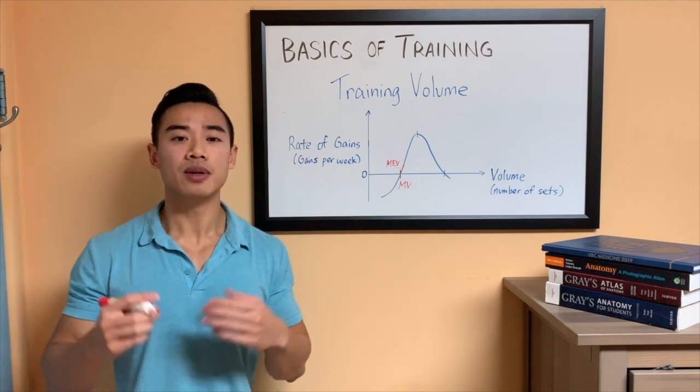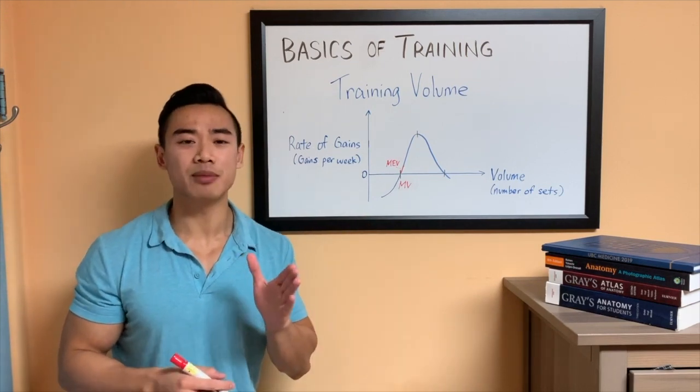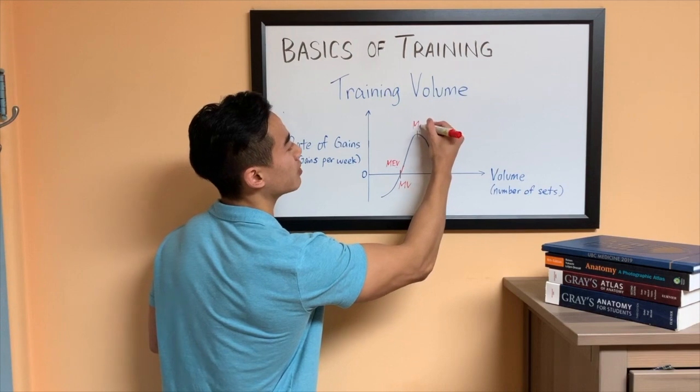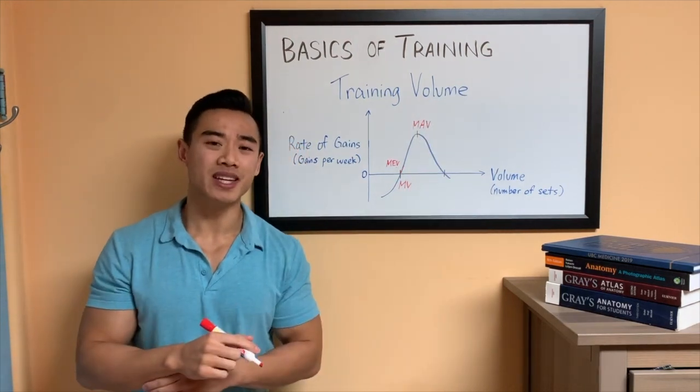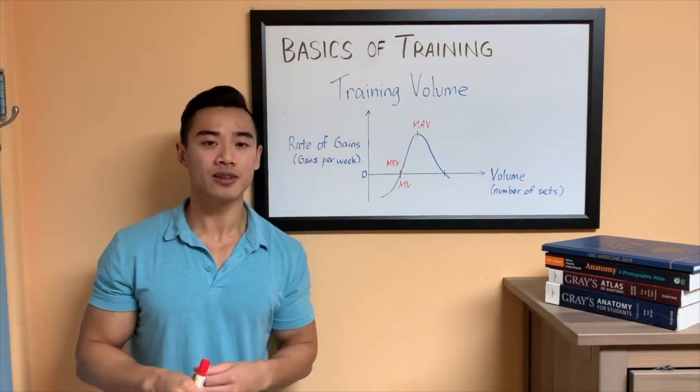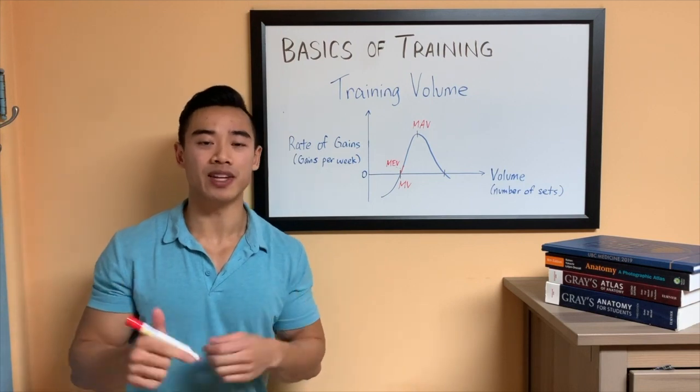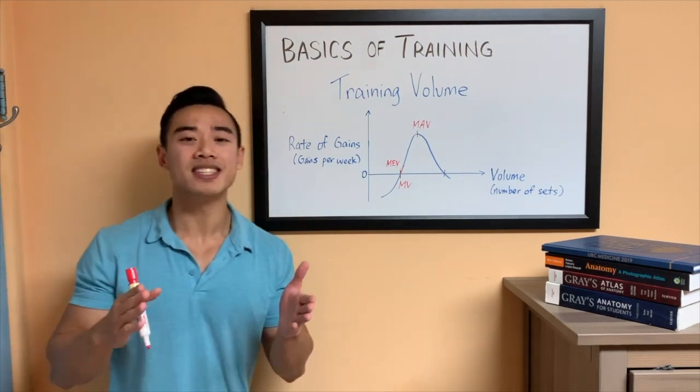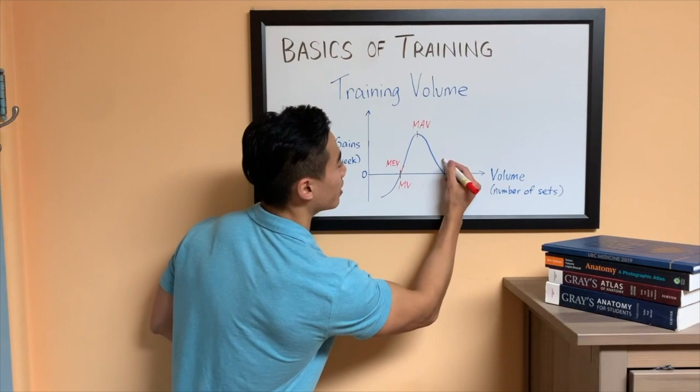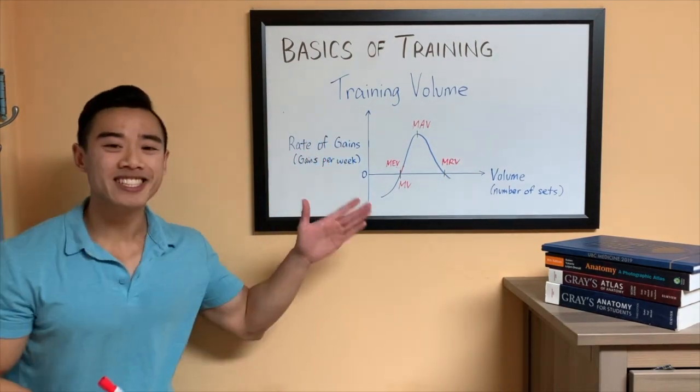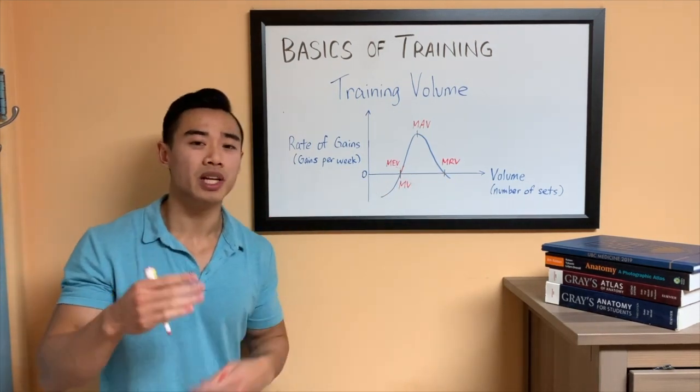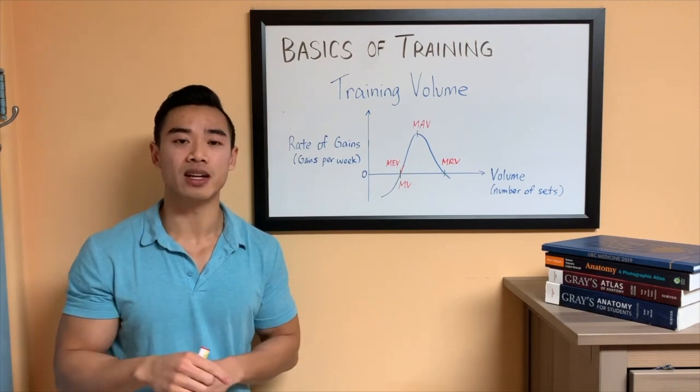After MEV, we have maximum adaptive volume. And that is the amount of volume that allows you to progress at your maximum rate, which we'll put here at this maximum point, MAV. I'll note that the MAV is difficult to pin down since it can change week to week. But obviously, this is what we're targeting. The last volume landmark is called MRV, or maximum recoverable volume. And this is the maximum amount of volume that you can still do and recover. I'll put this on the graph as MRV. You can see that when you go beyond your MRV, your progress actually dips into the negative. Simply put, if you go beyond your MRV, you're not recovering enough to actually progress.